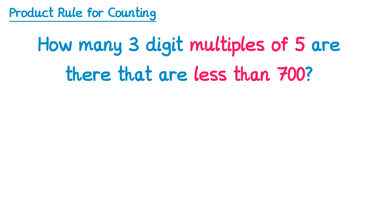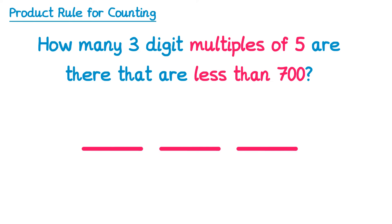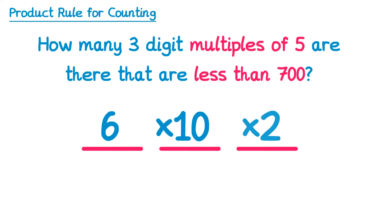In this question the number needs to be a multiple of 5 and also less than 700. Again we draw three lines. The first digit must be one of 1, 2, 3, 4, 5 or 6 — it can't be 7, 8 or 9 else the number would be greater than 700 — so there are six possibilities. The middle digit could be any digit from 0 to 9, that's 10 digits. The final digit must make the number a multiple of 5, so it ends in either 0 or 5, giving only two possibilities. So 6 times 10 times 2 is 120.